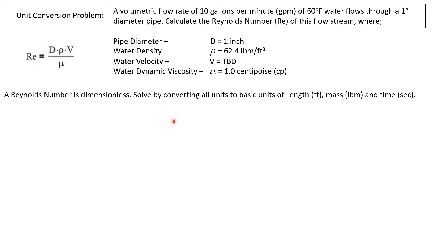Well, we're going to convert all of our units that we're going to put into this Reynolds number equation to basic units of length, mass, and time. So we're going to convert everything to feet, pounds mass, and seconds.